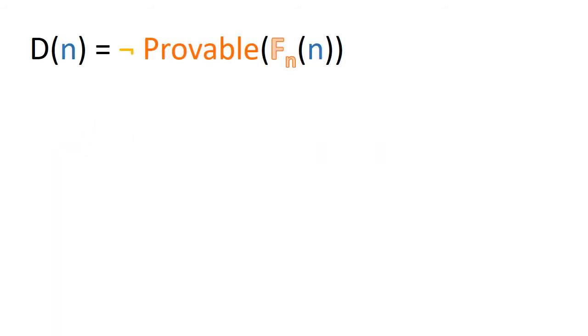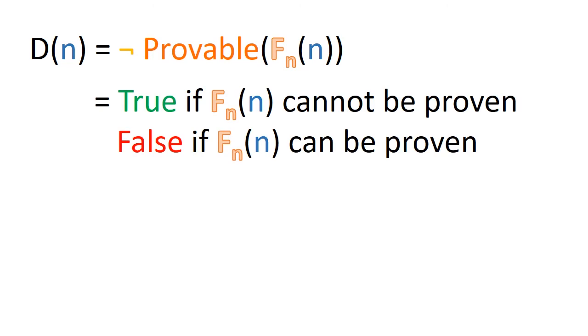Now consider the formula d where d of n is defined as not of provable of f sub n of n which says that for d of n if we take the nth logical formula from the list of formulas we created and see whether it's provable when given input n, the formula d of n returns true if it's not provable and false if it is.